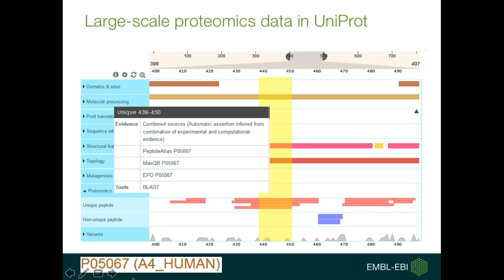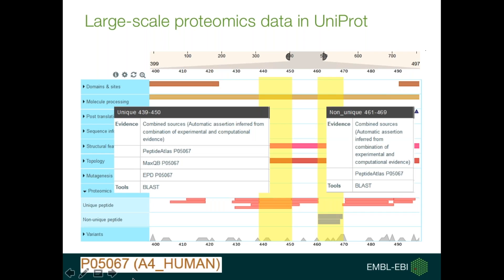This is a graphical display of part of a sequence of the A4 human entry that you can find on UniProt.org now. Towards the bottom of the screenshot, you see the proteomics section in light blue, which is unfolded, and you have a row for unique peptides in red and non-unique peptides in blue. One of the unique peptides, for example, would allow you, with confidence, to identify A4 human in a pool of proteins that might be your experiment.